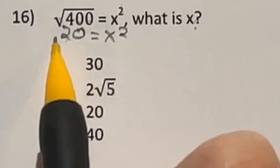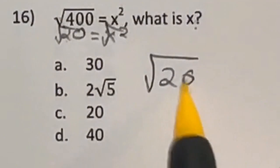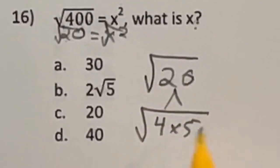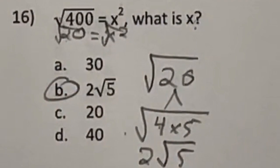Now to find x, we have to square root both sides. So we end up with the square root of 20. Well, 20 can be broken down into the square root of 4 times 5. Well, the square root of 4 is 2, so we can bring that out front to say 2 times the square root of 5 that's left over, which means our answer is B.